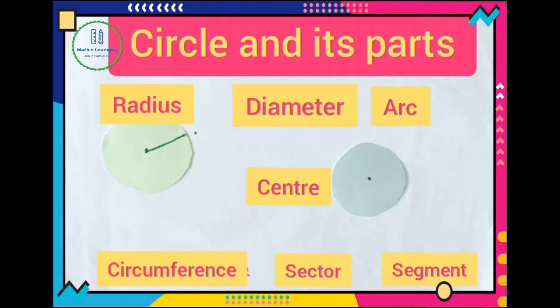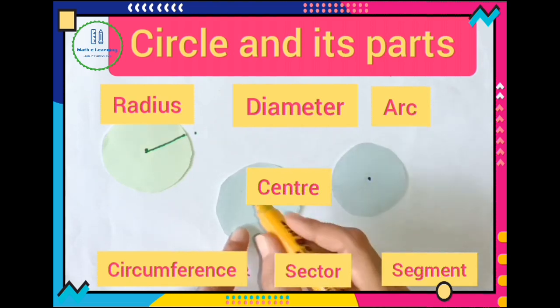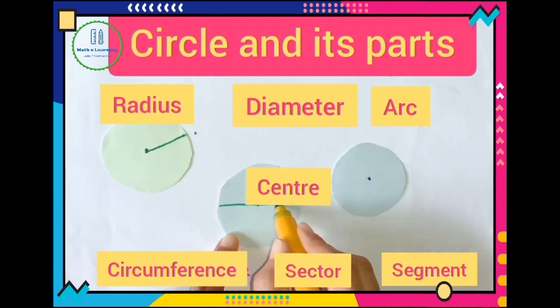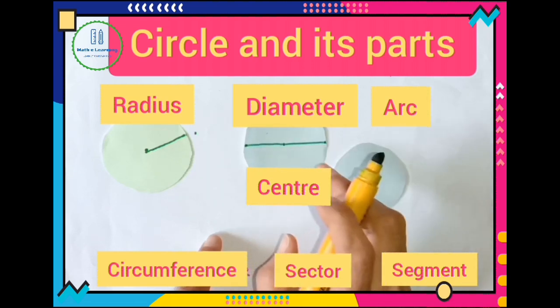Now we understand about diameter. And here from center point I draw a line segment, a line segment whose end points are on this circle. So this line segment is called diameter.